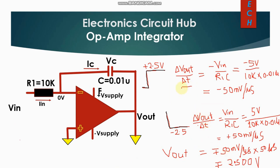For a numerical example with R1 = 10 kΩ and C = 0.01 µF: the rate of change of output for a positive signal of +2.5 V is −Vin / (R1 × C) = −5 V / (10 kΩ × 0.01 µF) = −50 mV/µs. So when the input is high, the output changes at −50 mV/µs.